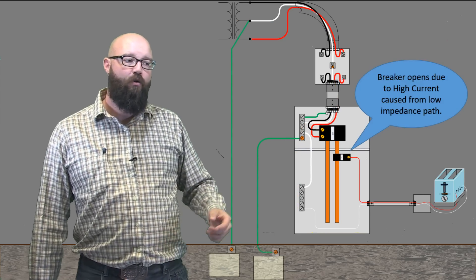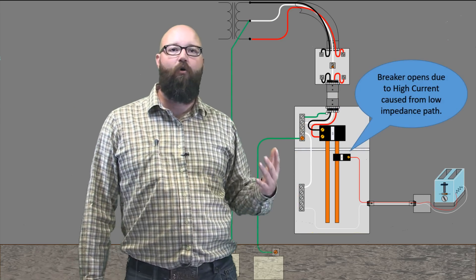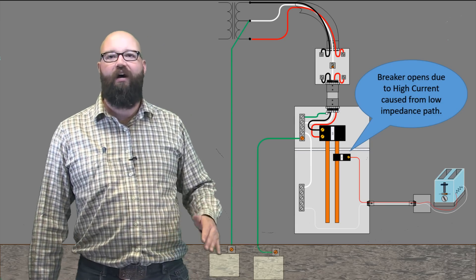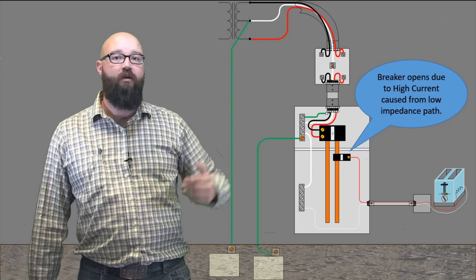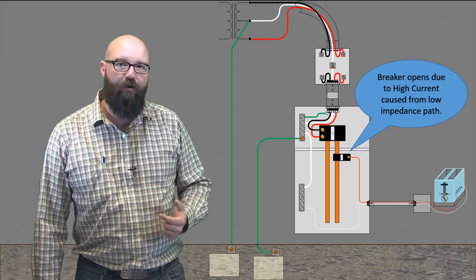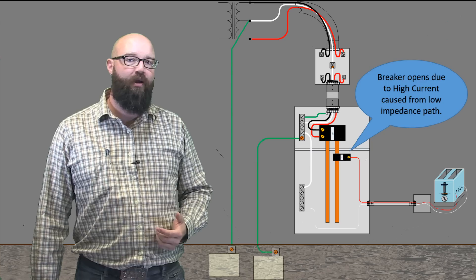Why did it open the breaker? Well, because we have this low impedance path. And we know Ohm's law tells us that if I have a very low impedance, I end up with a very high current. And we use that very high current to trip the magnetic portion of that breaker.